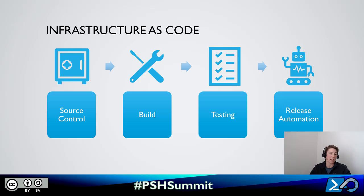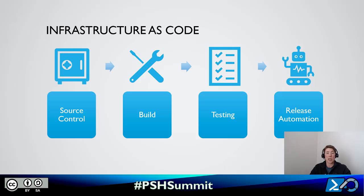That code file specifies: two CPUs, eight gigs of RAM, this is the OS, this is the file system layout, this is how SQL Server should be configured. Since we've now defined that VM in code, we can keep that in source control. When we go to deploy that infrastructure into our environment, it will be built, there'll be some testing to ensure everything's working as expected, and then any changes can be released automatically using this pipeline.